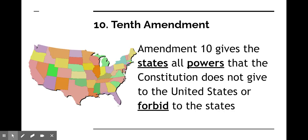The Tenth Amendment is about the principle of federalism, which you took a quiz on earlier this week. Essentially it says that anything not given to the national or federal United States government in the Constitution is reserved for the states. It protects each state's power to make its own decisions about things related to their culture. For example, states like Texas and Alabama have stricter laws on abortion, while Colorado has legalized marijuana as a substance where other states have it criminalized. This shows how each state can make their own laws to fit their culture.